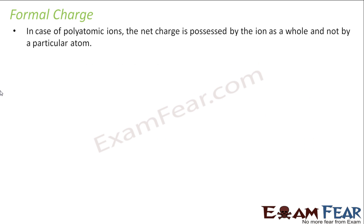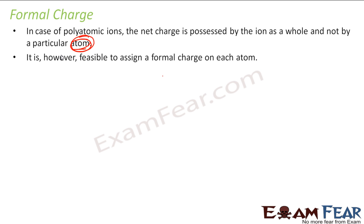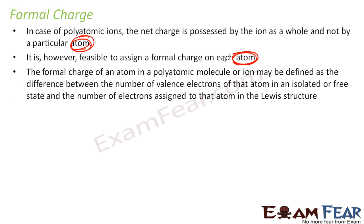In many cases, the net molecule is not having charge, but sometimes they have charge also. It is possible to assign charge to a particular atom. I am assigning charge to a particular atom. Sometimes the whole molecule may be neutral, or may have charge, but it is possible to assign formal charge to each atom in the polyatomic molecule. Formal charge is nothing but the difference between the number of valence electrons of the atom in the free state and the number of electrons assigned to the atom in the Lewis structure.